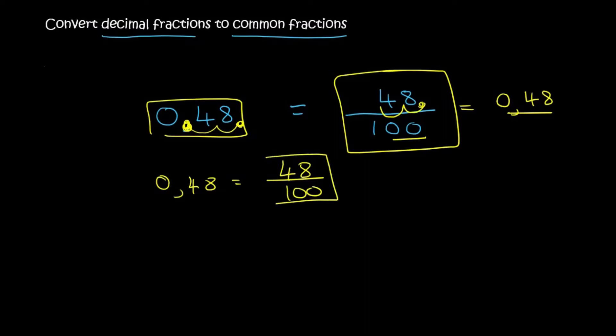That's not the end of the story. You would now type that into your calculator and let it simplify. Or you could do it yourself, but I typically advise students just to type it into your calculator at that point. And that gives you 12 over 25.